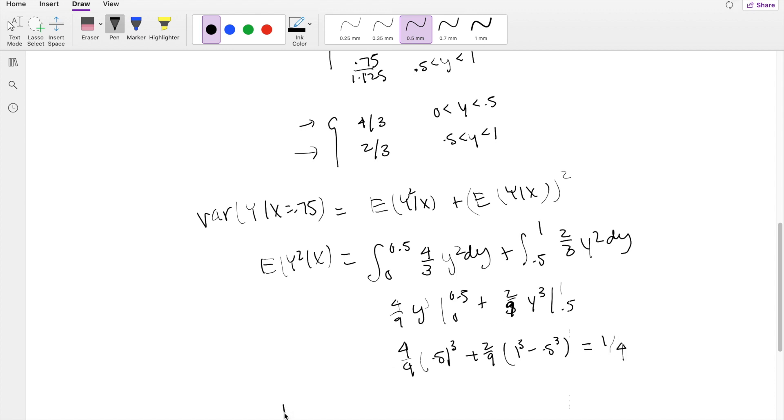Now, try to find the first moment here, y given x, you're integrating from the same range, 0 to 0.5 of the 4 thirds, but instead of integrating y squared, we're just integrating times y, because we're looking for the first moment, and this one's going from 0.5 to 2, 1, integrating just y, dy.